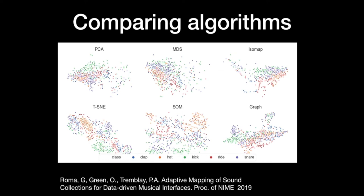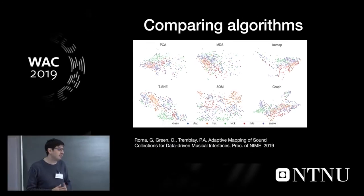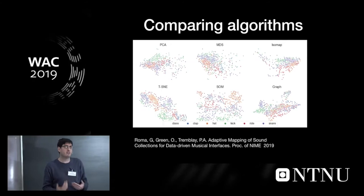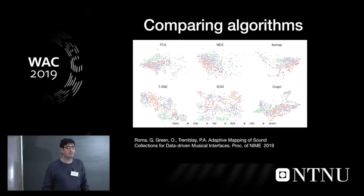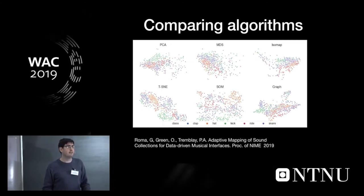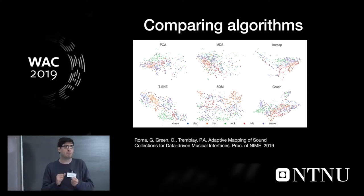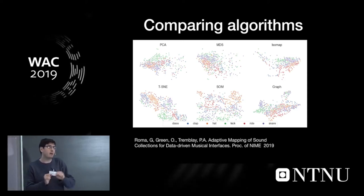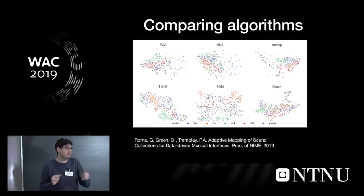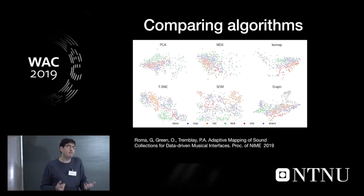We kind of concluded that the older algorithms like PCA, MDS, these are the algorithms that try to preserve the global space, are less interesting, but actually all the others, they all had some kind of interesting affordances for music. And from then on, the interest was more in the other aspects of what parameters they have, how can we tweak them to create different shapes, and how fast they are.